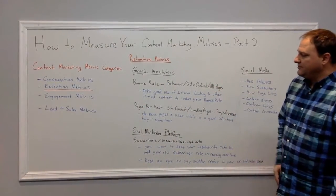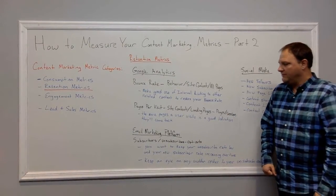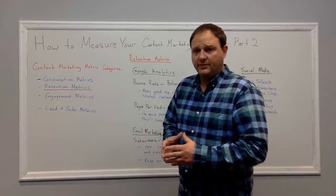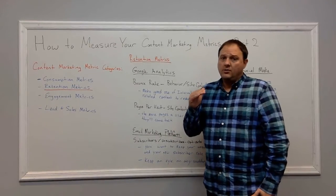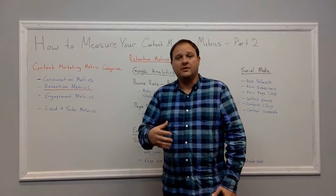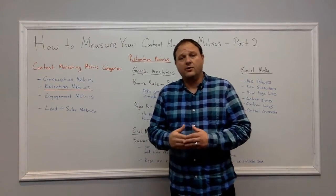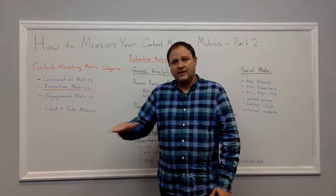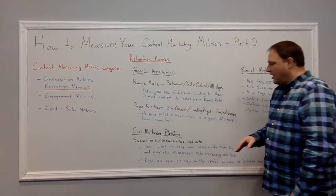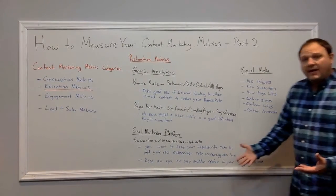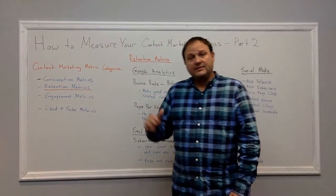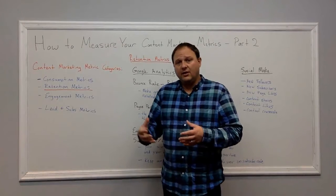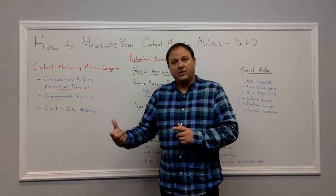That covers analytics for retention metrics. Now let's look at your email marketing platform. Here, what you want to look at is your subscribers-to-unsubscribe and opt-out ratio. You want to keep your unsubscribe rate low while your new subscribers continue increasing over time. Keep an eye on sudden spikes in unsubscribers. If you see a sudden spike, you need to isolate it — look at whether a specific email you sent is causing this. If it's in your marketing funnel, then you need to address that.